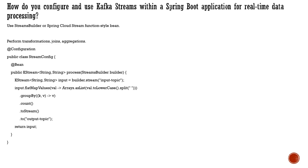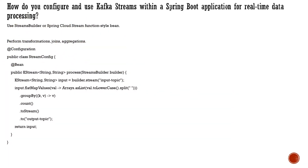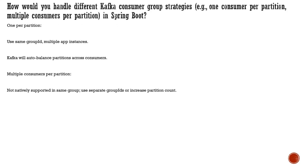How do you configure and use Kafka Streams with a Spring Boot application for processing real-time data? We can use StreamBuilder or Spring Cloud Stream, which is a functional style using beans. You can perform transformations, aggregations, and joins. You define a class and a bean with a process method that takes a StreamBuilder input, provides the topic name, and applies transformations like group-by and counting, converting the result to a KStream on the output topic.